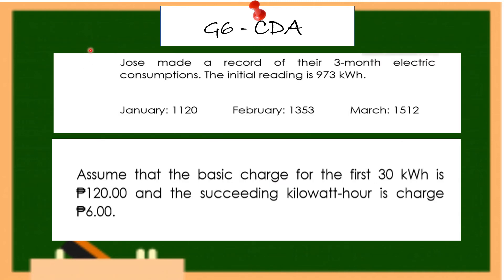In this problem, Jose made a record of his electric consumption. The initial reading is 973 kilowatt-hours. In January it was 1,120; February, 1,353; and March, 1,512. Assume the basic charge for the first 30 kilowatt-hours is 120 pesos, and each succeeding kilowatt-hour is charged 6 pesos.